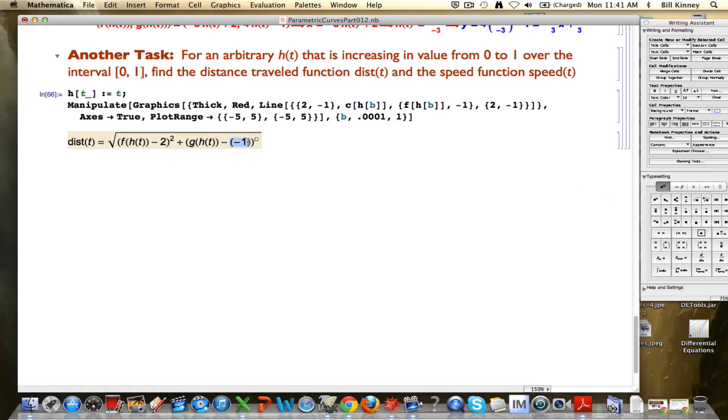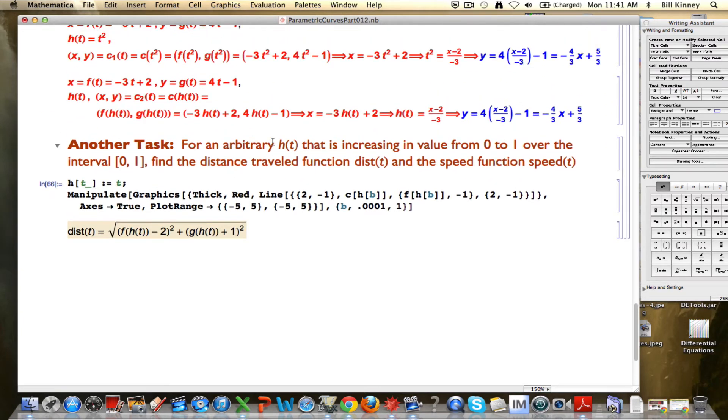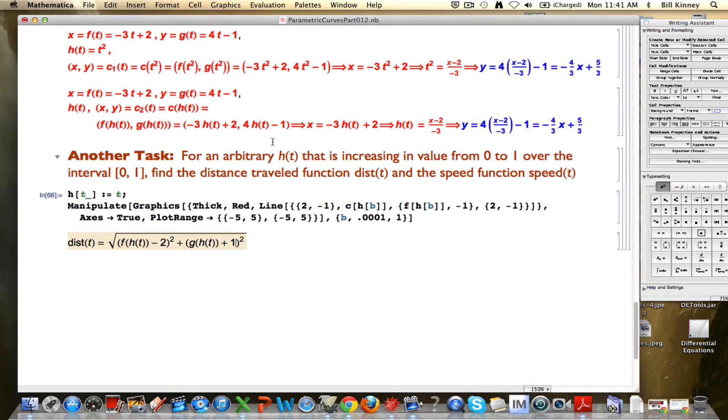You can start the coordinate there of negative 1. I am squaring these lengths. Of course, this quantity is really the same thing as g of h of t plus 1, so I can simplify it to that. That, for an arbitrary f, g, and h, is the distance traveled function, at least if I start at the point 2, negative 1. f and g are not arbitrary, though they're something specific, so we can use these formulas at the top here to simplify this.